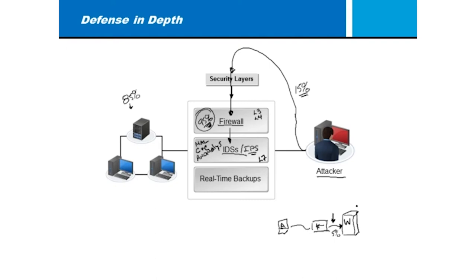We can also have the system constantly backing itself up so that if it's compromised, we can do a restore — sometimes called a shadow backup, bringing us into real-time backups. Some firewalls can do both intrusion detection and firewall functions in the same hardware appliance. The big players include Checkpoint, Cisco ASA, Juniper SRX, Palo Alto Networks firewalls, and many others — boxes that can do both functions and maybe even more, adding layers of security.